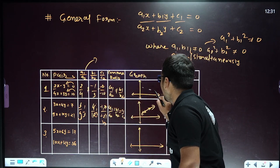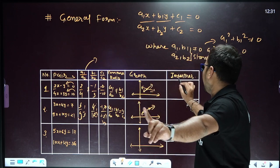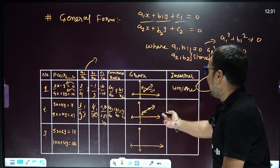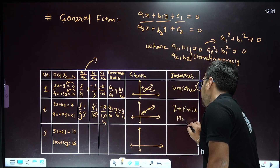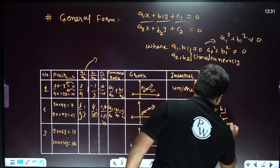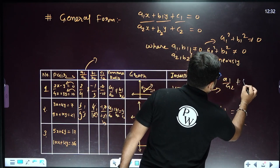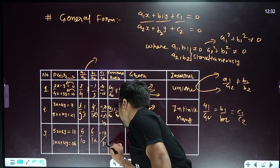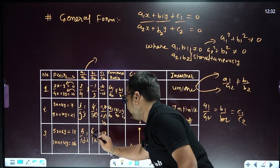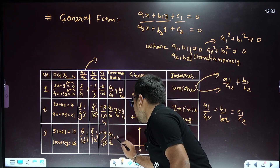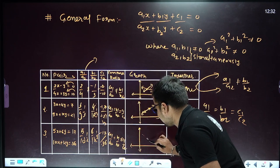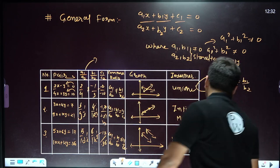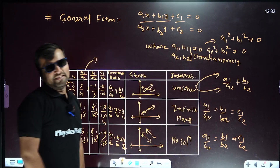If two lines intersect at a single point, that means a1/a2 is not equal to b1/b2, so you get a unique solution using elimination or substitution. If a1/a2 equals b1/b2 equals c1/c2, you get infinitely many solutions. If a1/a2 equals b1/b2 but not equals c1/c2 — for example, 5/10 equals 6/12 but -17/36 differs — the two lines are parallel and there is no solution.